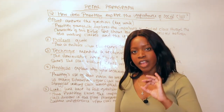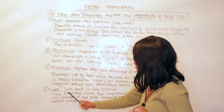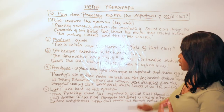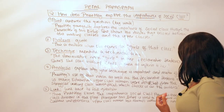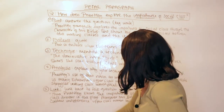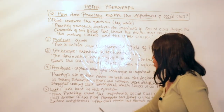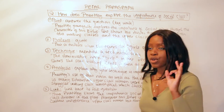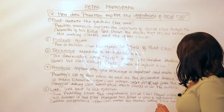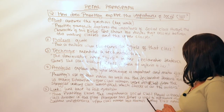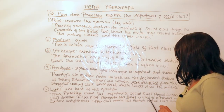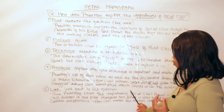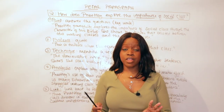The L stands for Link — link back to the question using its keywords. My link is: 'Thus, Priestley shows the importance social class played in exacerbating — that is, exaggerating and creating further — class divisions in the play. Moreover, Mrs. Birling is used to represent the callous indifference upper-class women felt towards working-class women.' As you can see, I've used the keywords 'importance' and 'social class' to show the examiner I'm answering the question throughout.